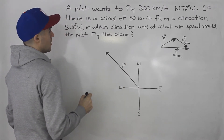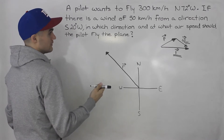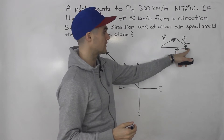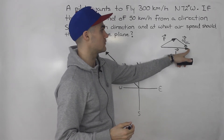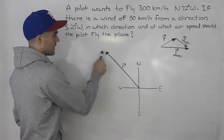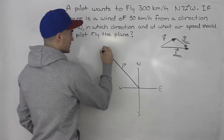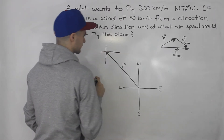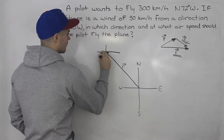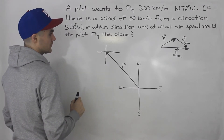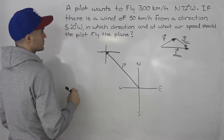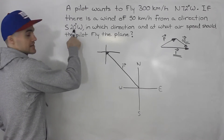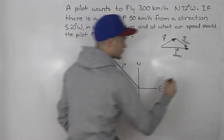We have to draw the wind vector as well. Notice from this diagram that the head of the wind vector is going to meet the head of the resultant vector. So the head of the wind vector is going to be at this point. Let's draw another compass at the head of the resultant, and notice that we're told the wind is coming from a direction south 20 degrees west.